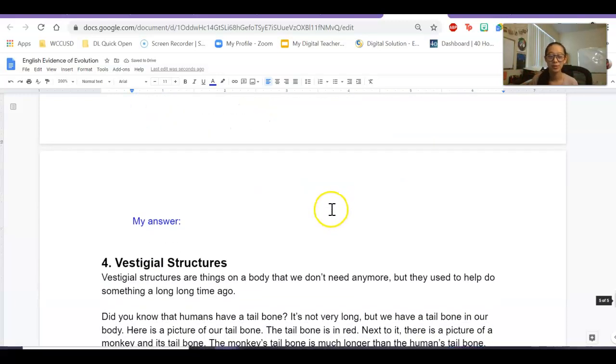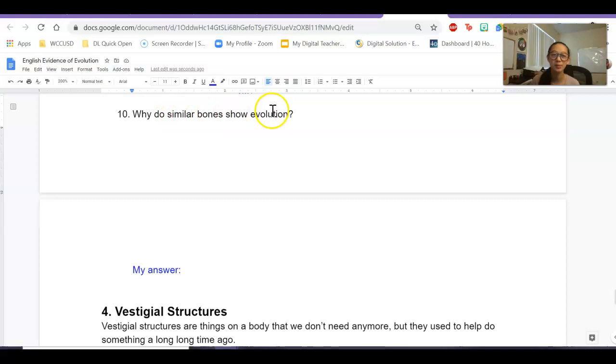So make sure you do that. And then the last one, why do similar bones show evolution? So we talked about evidence, right? Why is this evidence for evolution? You're going to write your answer here.